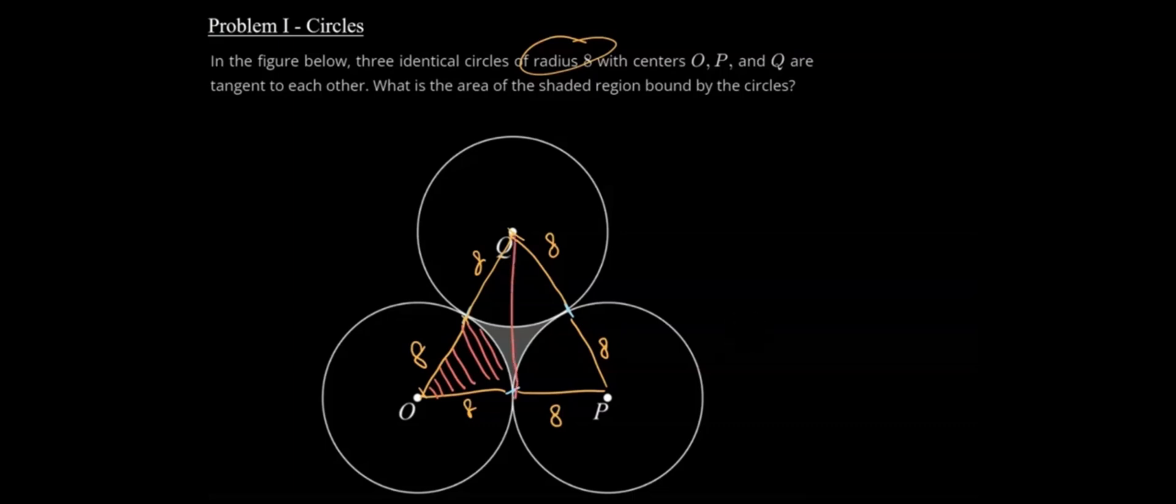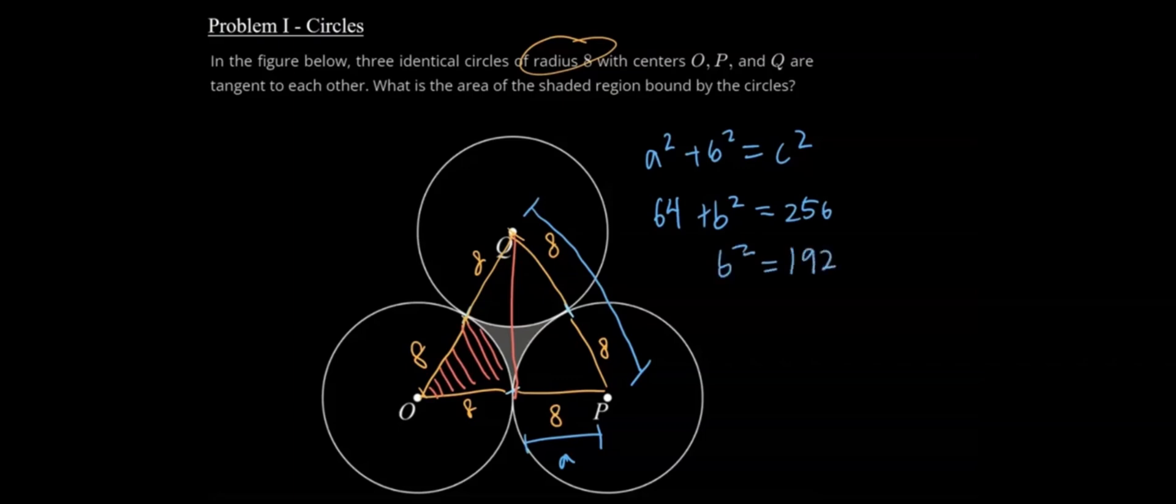Now we can use the Pythagorean theorem because we know that this side length here is a total of 16, and this one's 8. So we have a squared plus b squared equals c squared. Let's call this side a. That means we have 64, which is 8 squared, plus b squared equals 256, which is 16 squared. That means b squared equals 192 if I subtract 64 from both sides. So b equals the square root of 192.